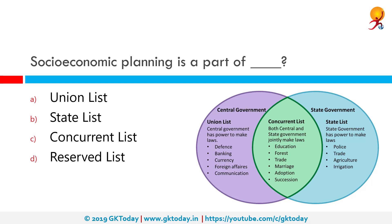Socio-economic planning is a part of which list? The correct answer is the Concurrent List. The Concurrent List, or List 3 of the 7th Schedule, is a list of 52 items — though the last item itself is numbered 47 — given in the 7th Schedule to the Constitution of India. It includes powers to be exercised by both the Central and State Government. If you take a look at the Venn diagram on screen, it should give you a clearer idea.